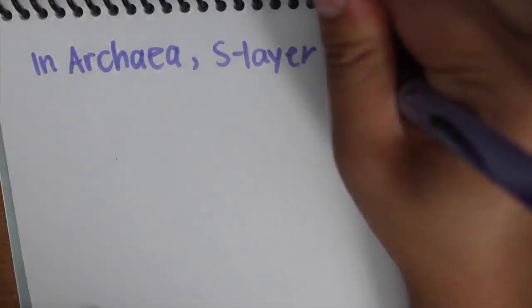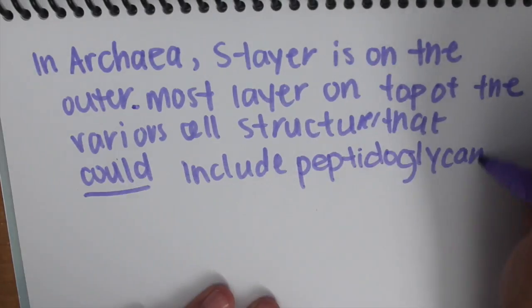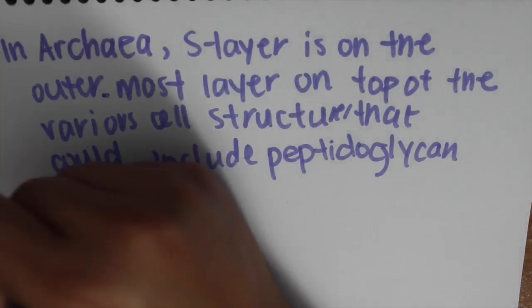In archaea, the S layer is on the outermost layer on top of the various cell structure that could include peptidoglycan or not.